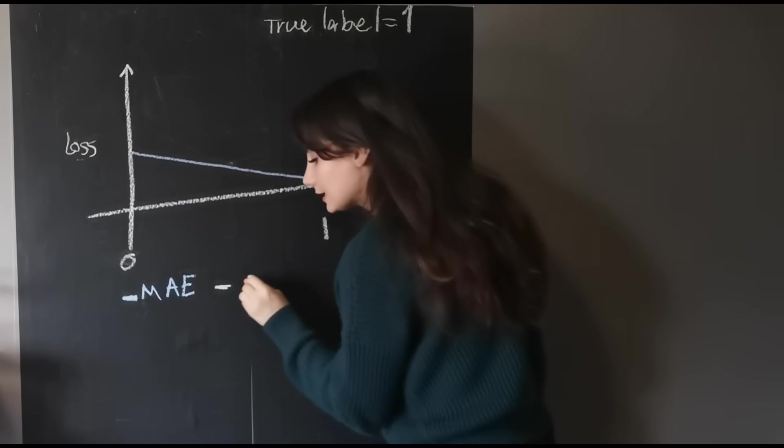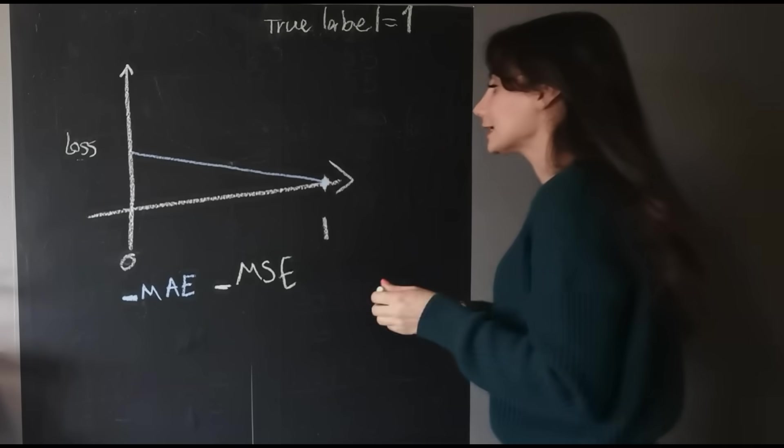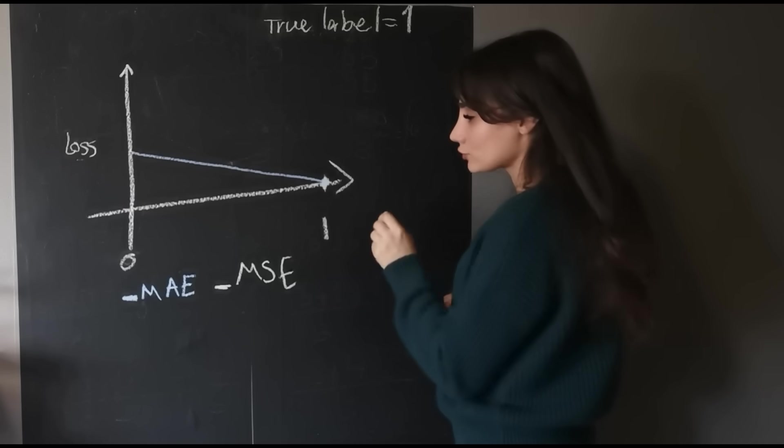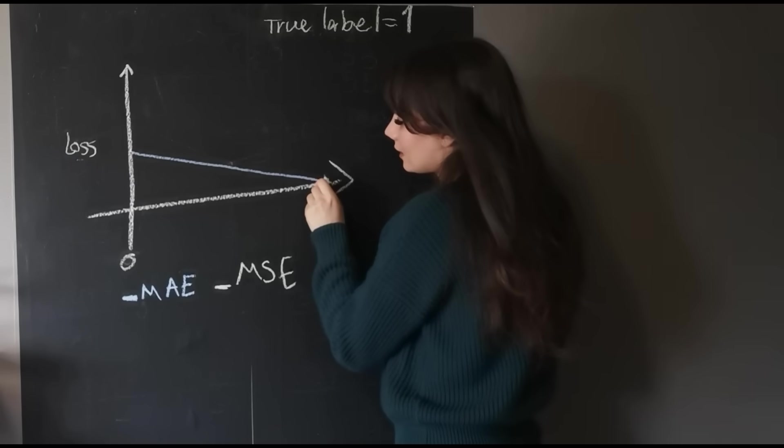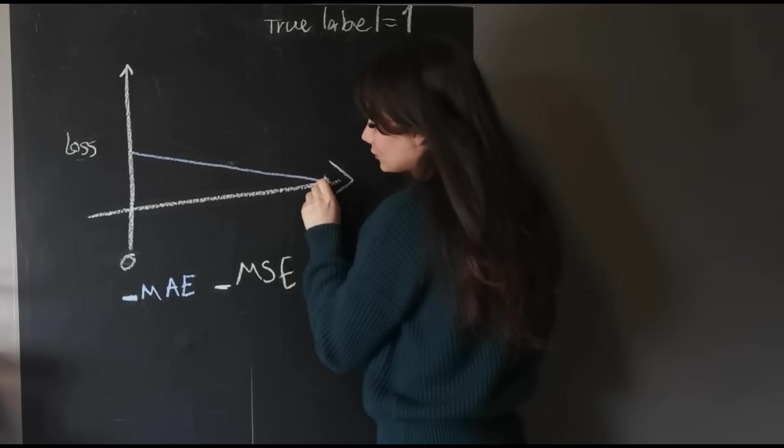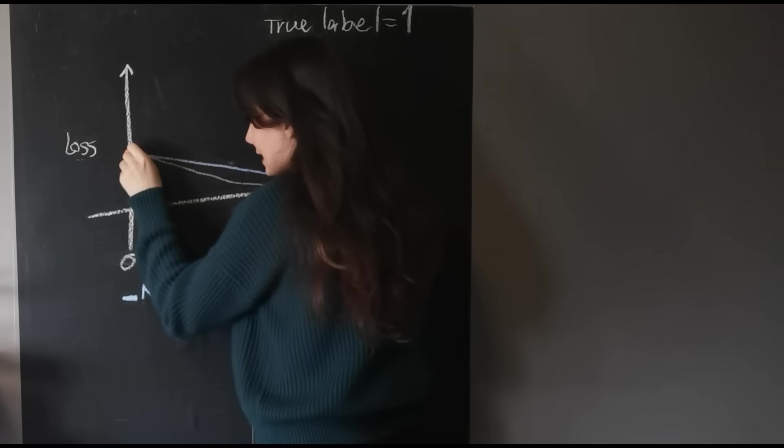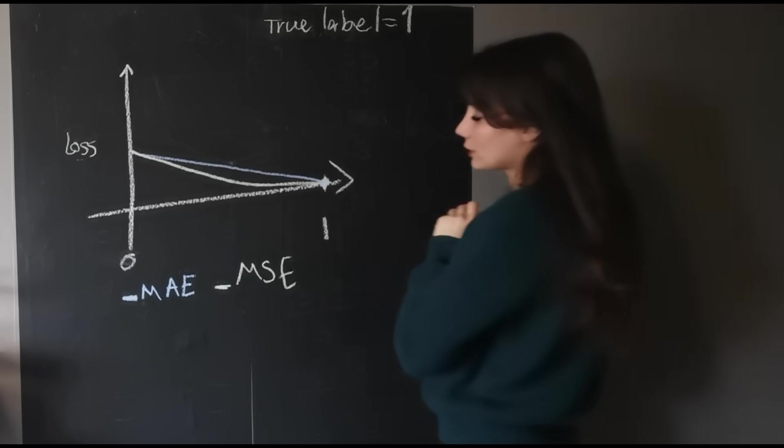Green is MSE, which is mean square error. So the way that mean square error goes, it's even worse than MAE. It's going to be slower growing here. And then after that, it's going to reach MAE.